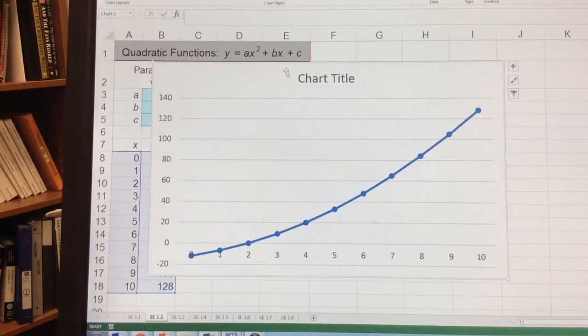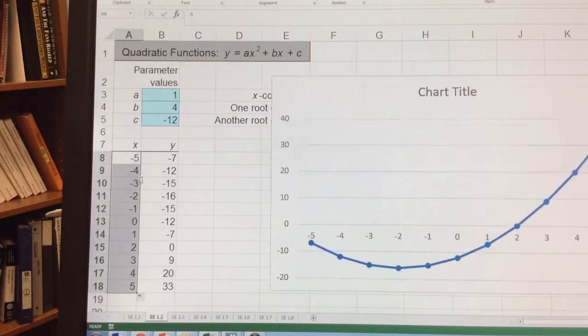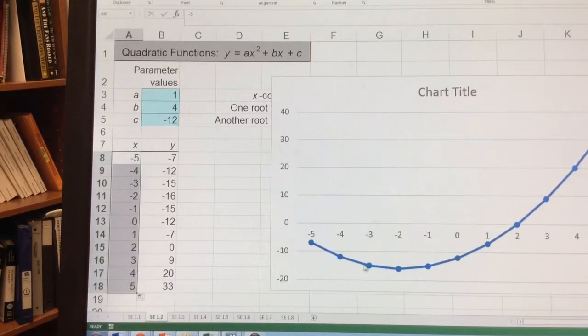So the whole thing is not there because it should be a u shape, a smiley face. And so it might be the case I just don't have enough. My x's, I need to make it go negative. So let's start with this at negative 5, negative 4. And then bring that down. So we go from negative 5 to 5, and there we're getting a little closer.